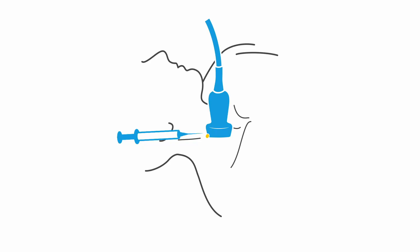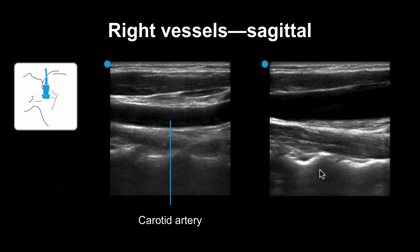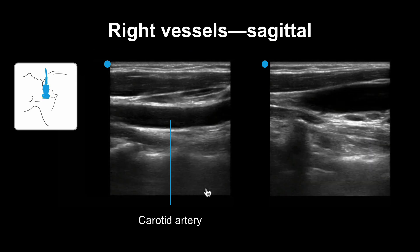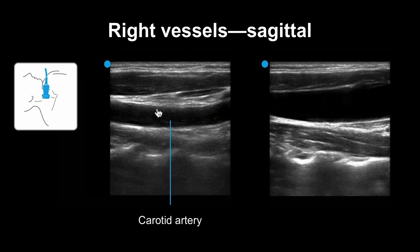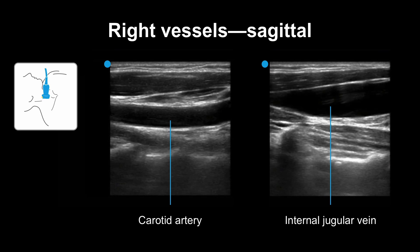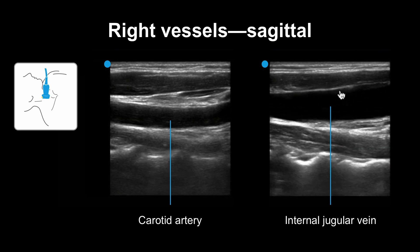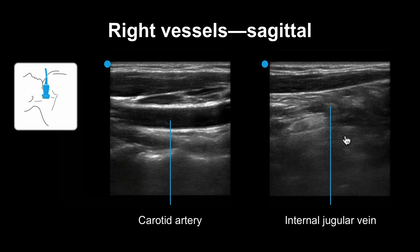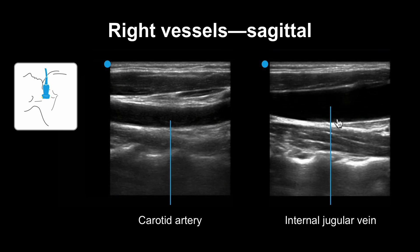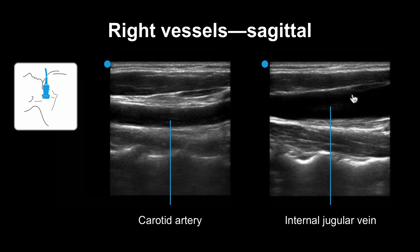Now let's take a look at the internal jugular vein and carotid in longitudinal or sagittal axis, when the vessels will appear like tubes. Here is a view of the carotid artery — you can see it looks like a long tube with pulsations and a thick wall. Here is the internal jugular vein; the wall is fairly thin and it picks up some pulsations from the carotid at the bottom, but for the most part it's not pulsating at the top.